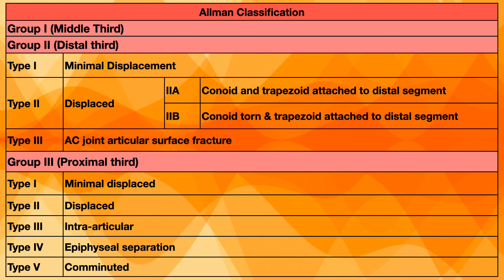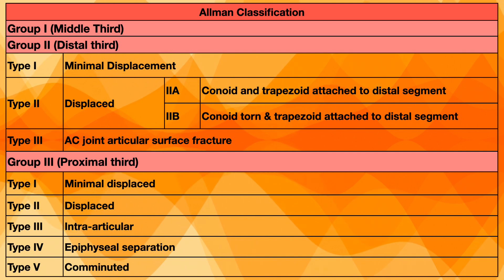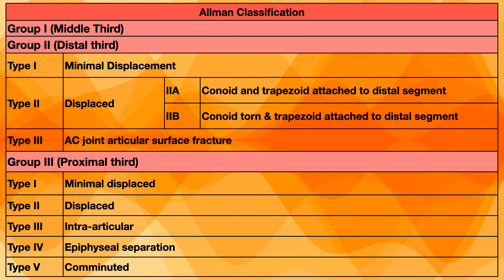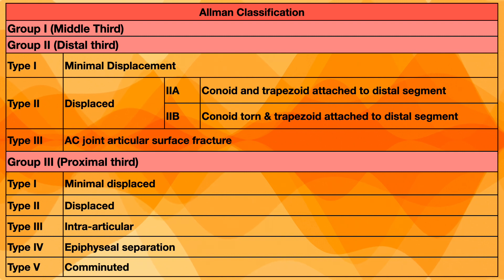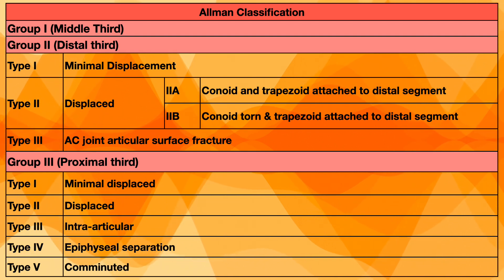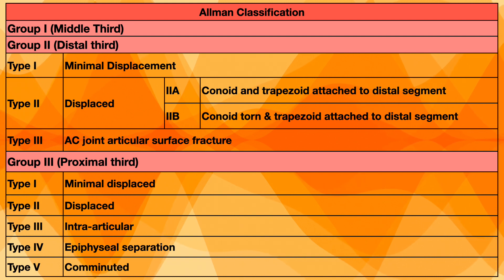This was the Allman classification of clavicle fractures. We usually go for non-operative treatment in clavicle fractures. For the distal third, we can consider surgery when there is compromise to neurovascular structures — either nerves or vessels — tenting of the skin, the patient is severely symptomatic, or sometimes for cosmetic purposes.